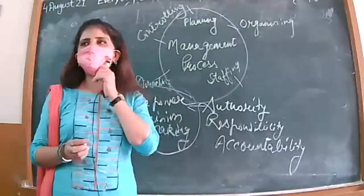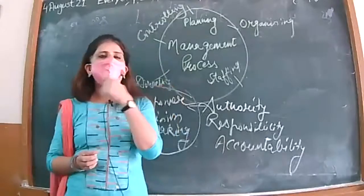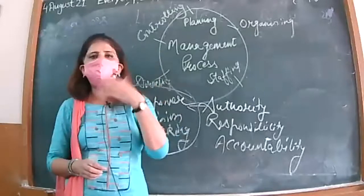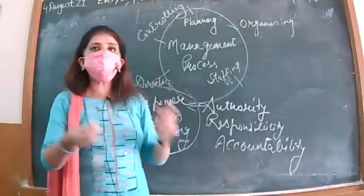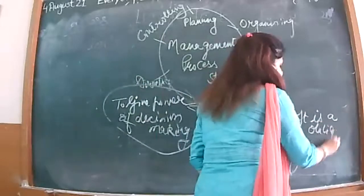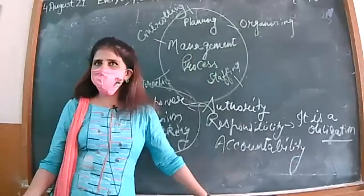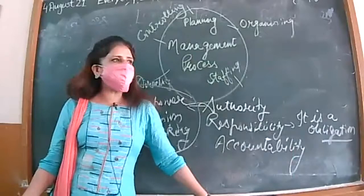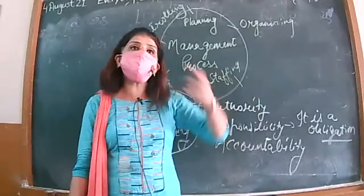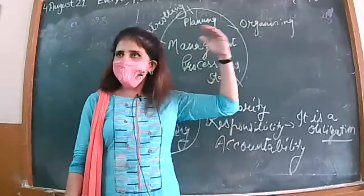What is the meaning of responsibility? It is an obligation — an obligation to complete the task. I am obligatory towards the principal of the school, and the principal is obligatory towards the management of the school. It is a level-wise, superior-subordinate relationship. So responsibility means it is obligatory on a person's part to perform their duty well.